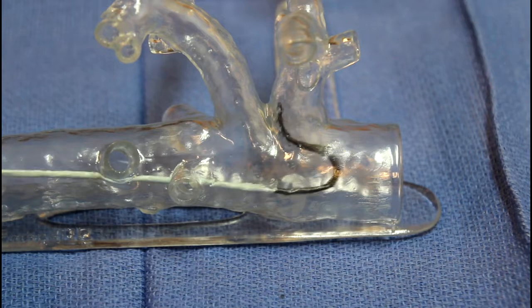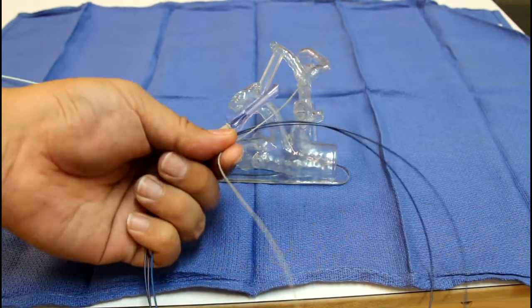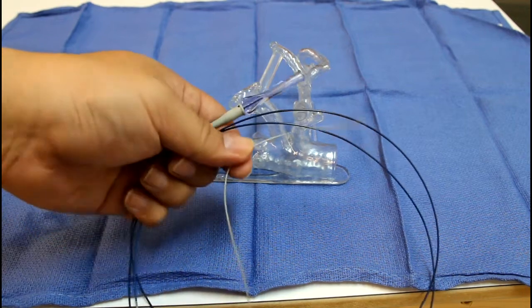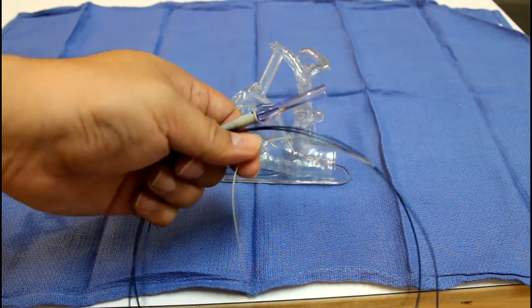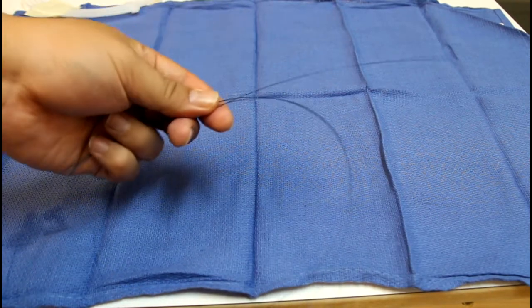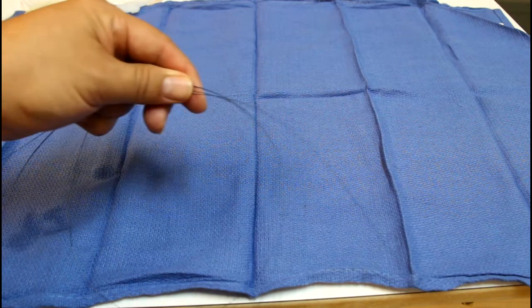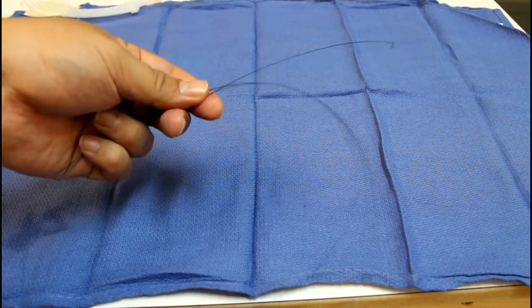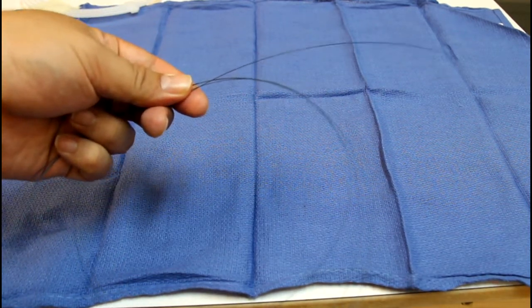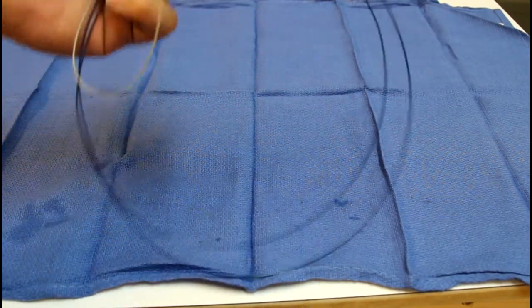Next, choose a micro catheter that will fit within the base catheter. In this instance I've selected a Marksman micro catheter. Choose a micro wire to guide the micro catheter. This is a Fathom 16 wire. Make sure that there's a slight bend at the wire tip so that it can be navigated.